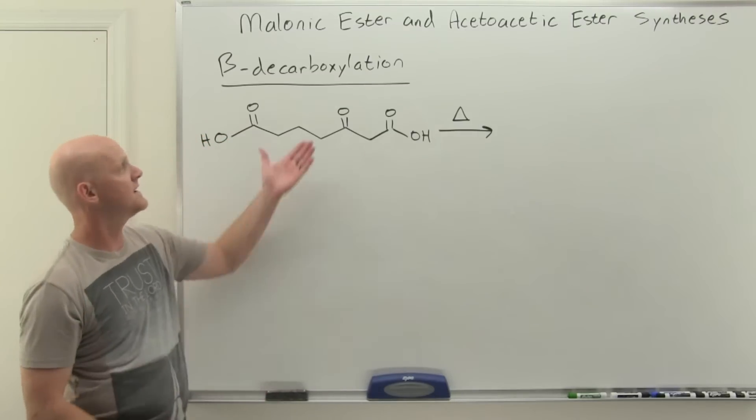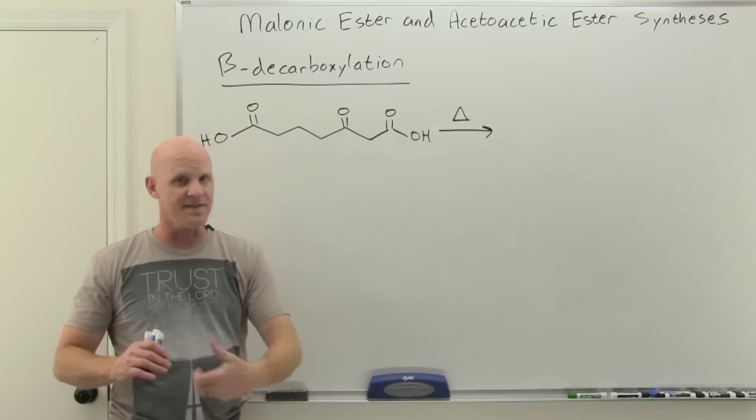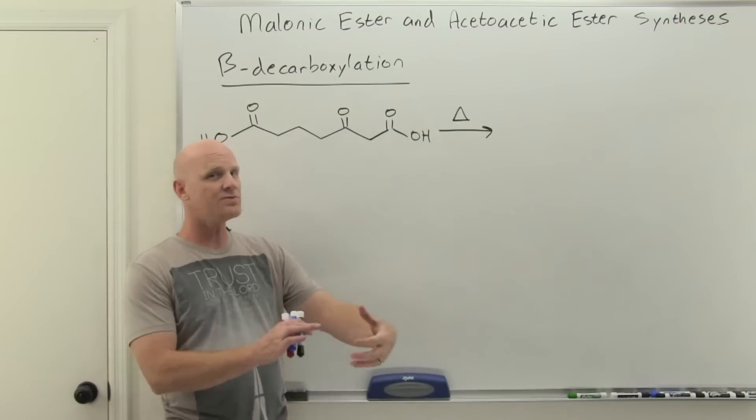It turns out one of those two is lost by beta decarboxylation that we're about to study. Now it's enzyme mediated in that case, but it's still beta decarboxylation. It's specifically the step where we convert isocitrate into alpha-ketoglutarate.